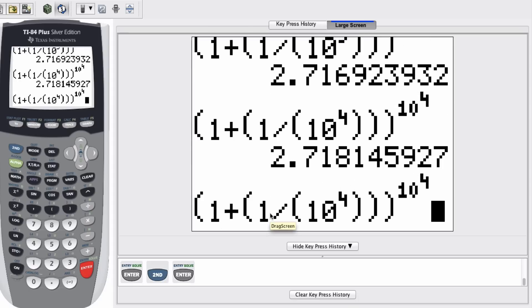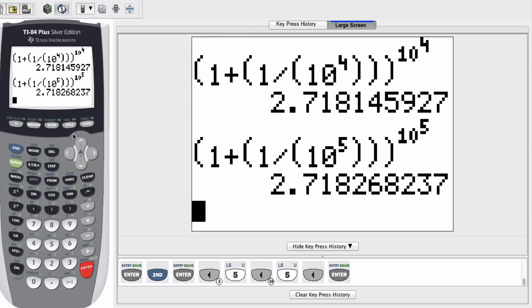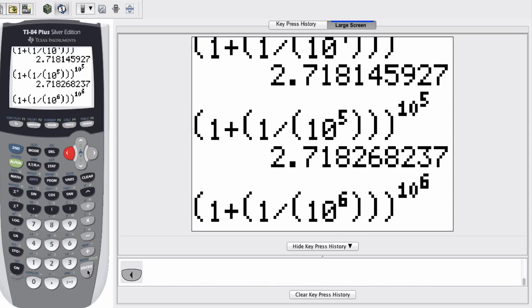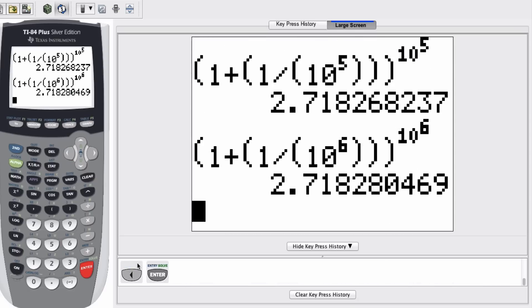Notice that these values seem to be getting really, really close to each other. Okay, I'm going to do second enter. This time we're doing to the fifth power. There we go. 2.718 again. And lastly, let's do it to the sixth power.